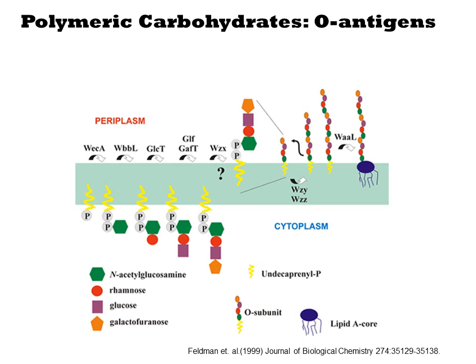We're looking here at the inner membrane of a prokaryote showing carbohydrate biosynthesis occurring on both sides of the membrane. Oligosaccharides are first synthesized on the periplasmic face, anchored to the membrane. They are then shuttled across the membrane and polymerized on the surface of the cell.